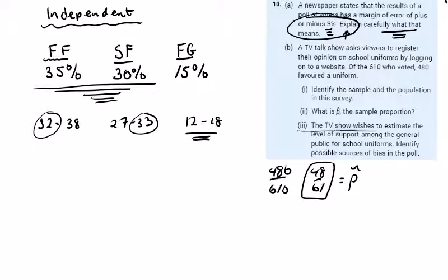The TV show wishes to estimate the level of support among the general public for school uniforms. Identify sources of bias in the poll. Well, only viewers of the program can vote. It might not be representative of the general public. It could be morning time or late at night or early on a Saturday. The sample size is 610, it's quite small. And then people that actually register and vote are more likely to favor something in general terms, they're likely to be biased.